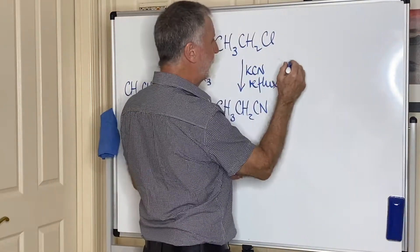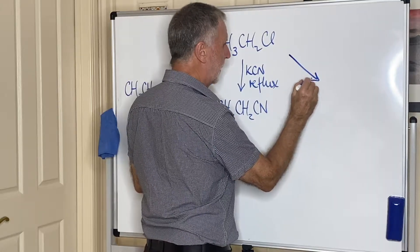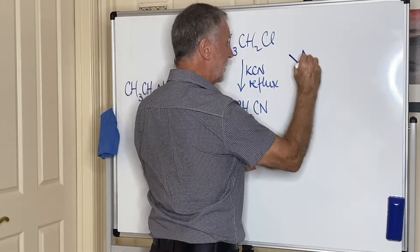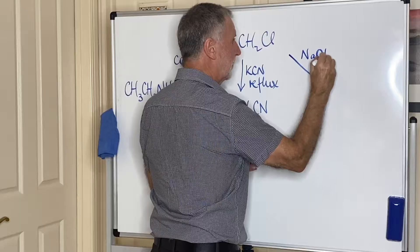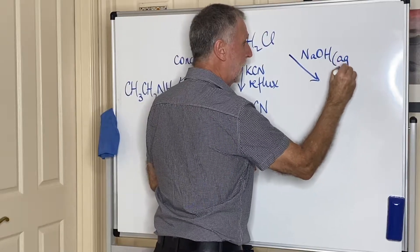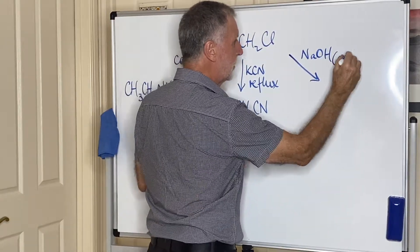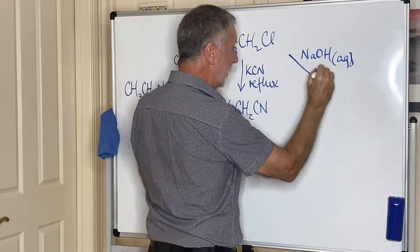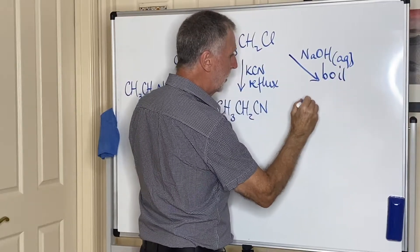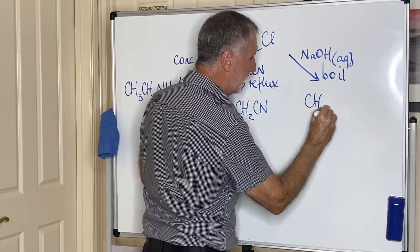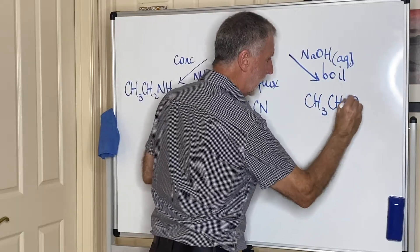The third and final substitution reaction is with an alkali, like sodium hydroxide. And if that alkali is in aqueous conditions, and we boil it, then we turn the haloalkane into an alcohol.